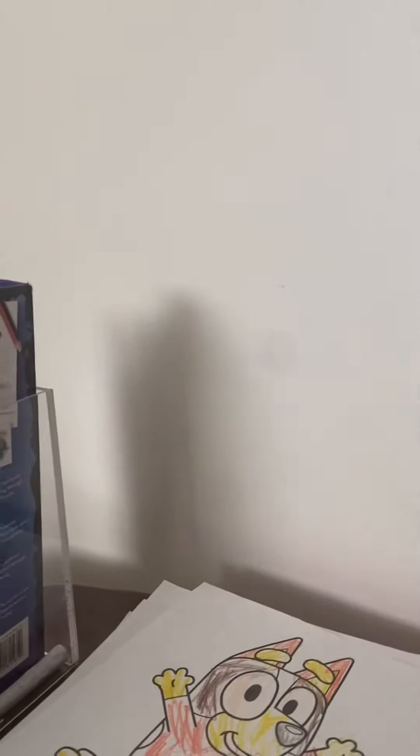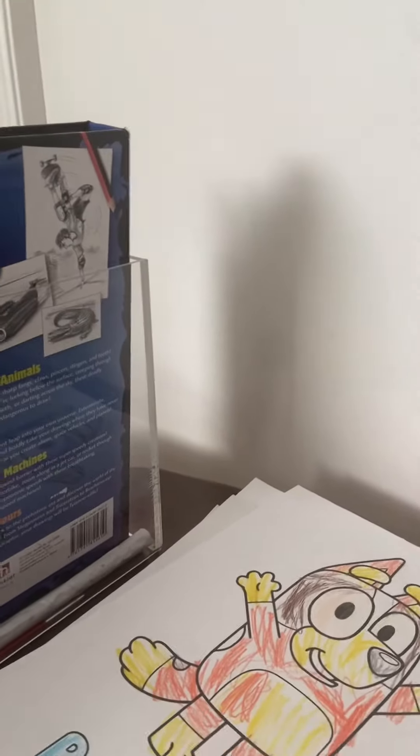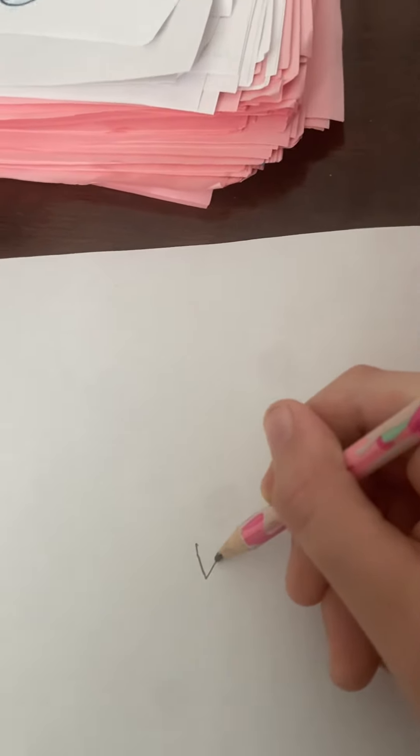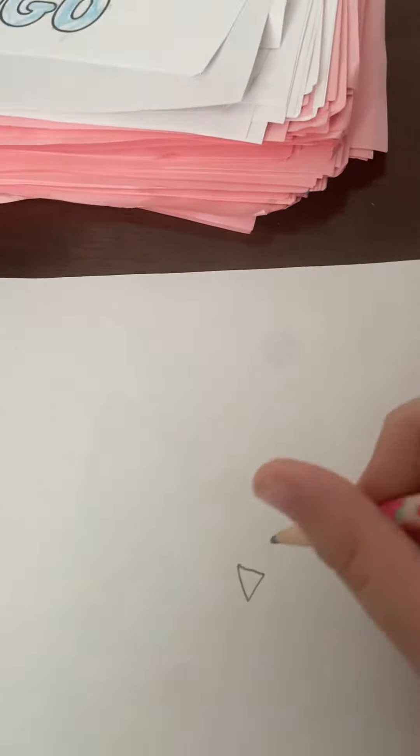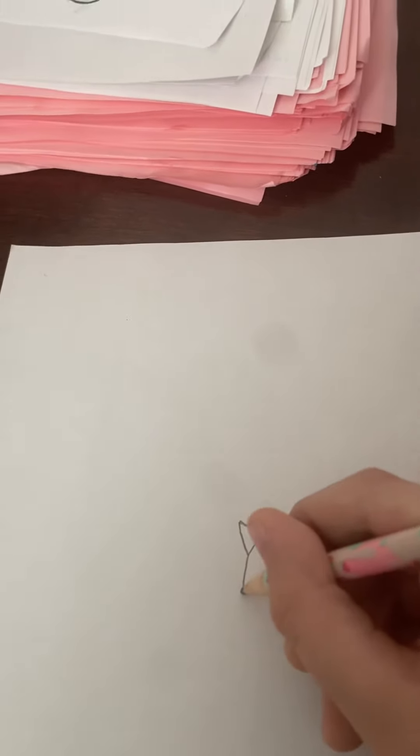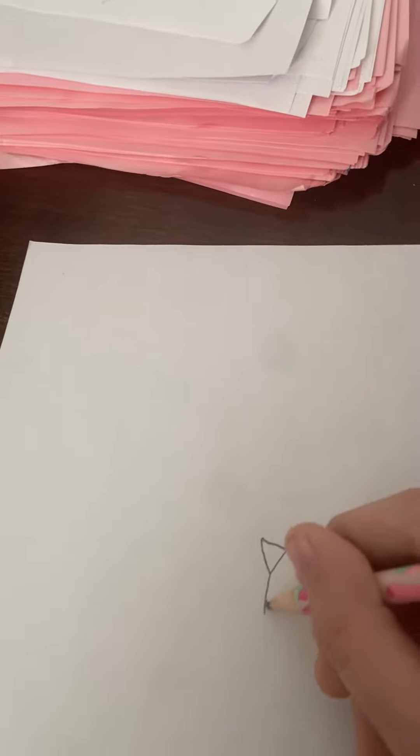Okay, today I'm going to be showing you how to draw a lion. So first you need to start with the nose. Just make an upside down triangle and then you need to make a line and then